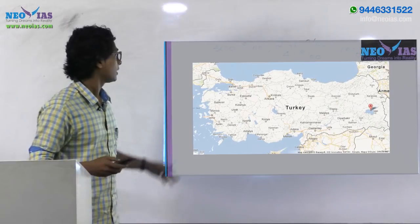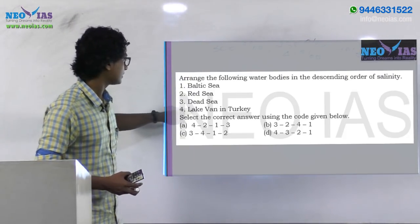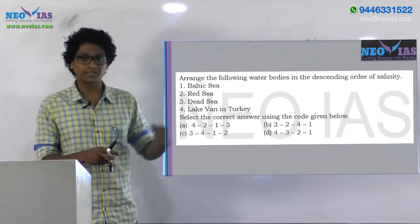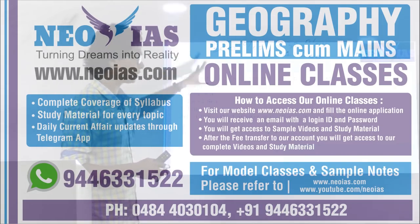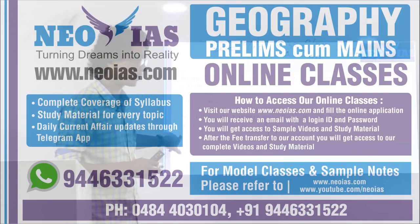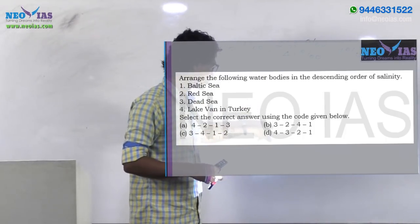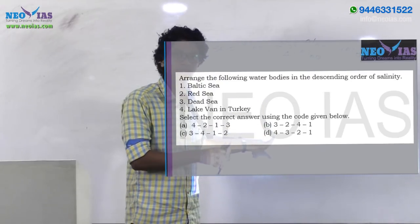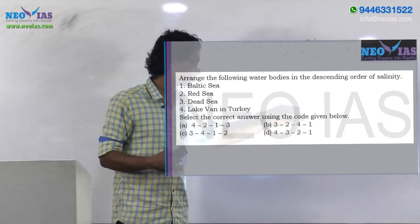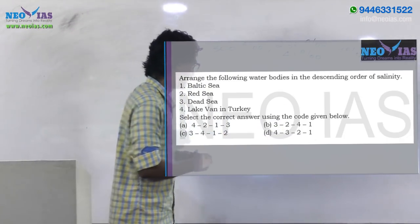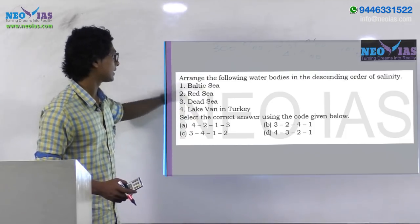As we can see, Lake Van has the highest salinity and the Baltic Sea has the lowest, so Baltic Sea must come last. This eliminates options A and C. Now between B and D, since Lake Van has higher salinity than the Dead Sea, the order must start with Lake Van. Therefore the descending order is: Lake Van → Dead Sea → Red Sea → Baltic Sea, and the answer is D.